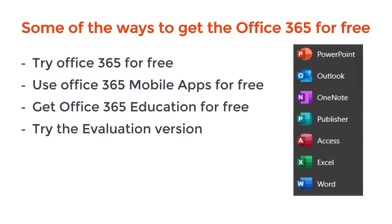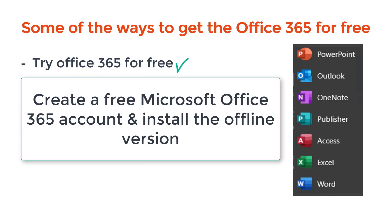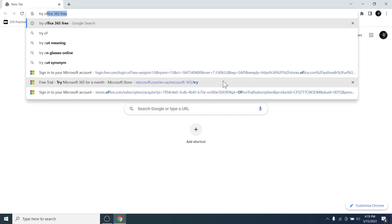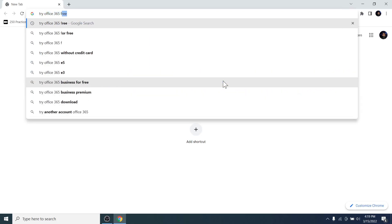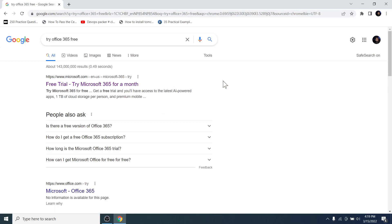Whichever way best suits you, you can proceed with that. In this video, we are going to try Microsoft Office 365 for a month so we can learn or practice how to use their applications, and then buy Microsoft Office 365 if you want to use it longer. Let's learn how to create a free Office 365 account first, and then set up the offline version in our PC. On a browser, search for 'try Office 365 free'.